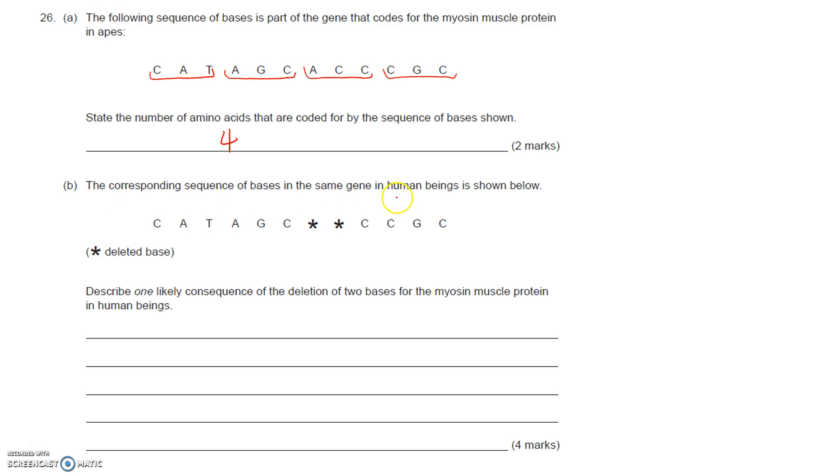The corresponding sequence of bases in the same gene in human beings is shown below and there are some deleted bases. Describe one likely consequence of the deletion of two bases for that protein. When we compare with the human one we see that there's a triplet here and a triplet here. If those two are missing, then the next triplet would be that one and then there'd be a further triplet going off here.